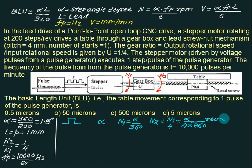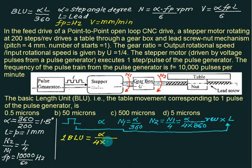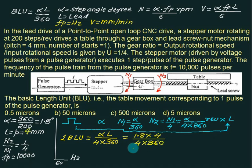So if I multiply this by L, then that will be the distance traveled in one pulse. It means one BLU equals alpha divided by 4 divided by 360 multiplied by L. So this extra factor coming is the G factor here. So we have alpha equals 1.8 here. Our lead is given as 4 mm divided by 4 divided by 360.